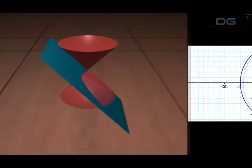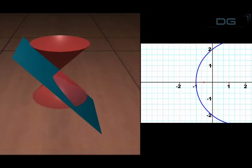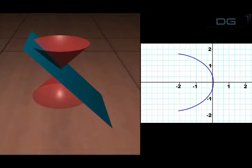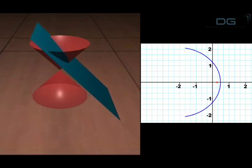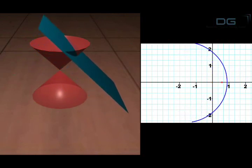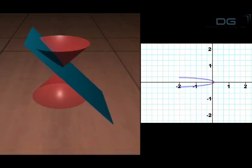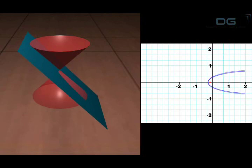Now, keeping the cutting angle constant and equal to the semi-vertical angle, start varying the distance of the plane from the vertex of the cone. You can see that as the cutting plane gets away from the common vertex of the double cone, the parabola gets wider.